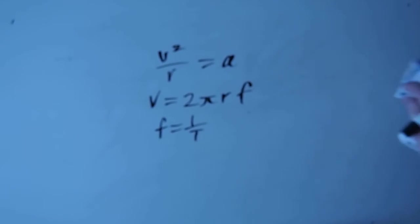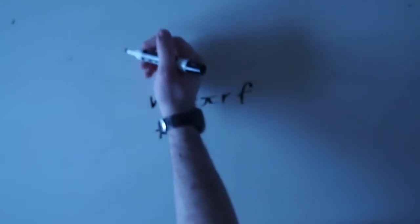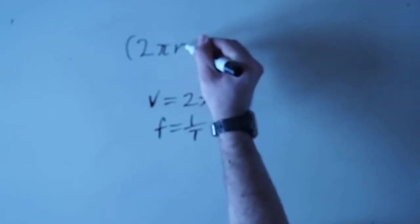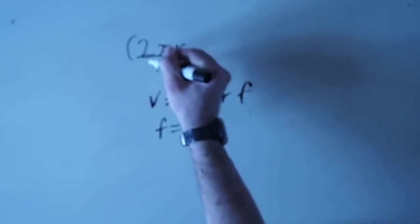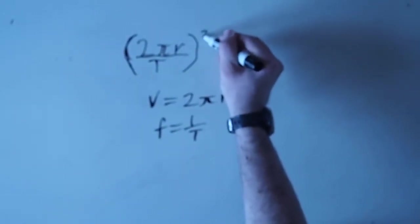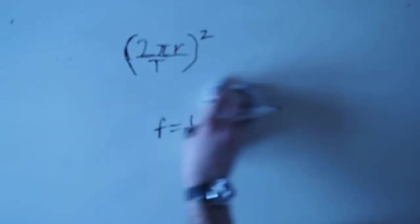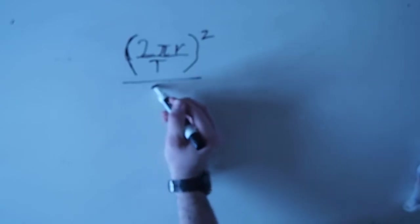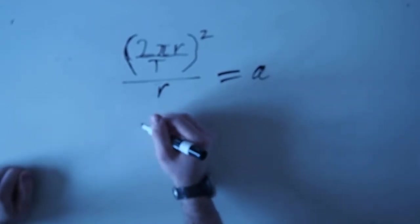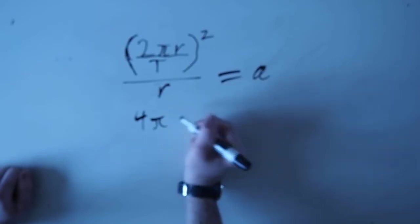So, rewriting this top equation, you get 2 pi r over t squared for r. Not sure why I wrote 2, but r is correct. It's equal to a. So, expand that, do a little cancellation.